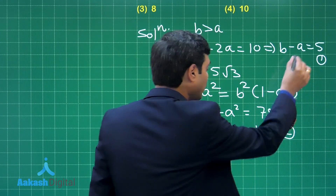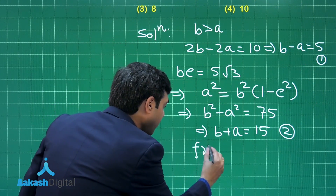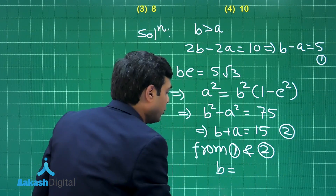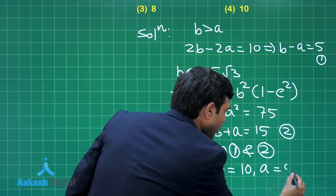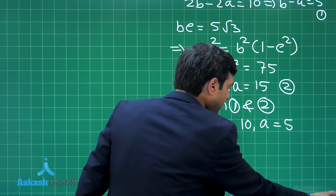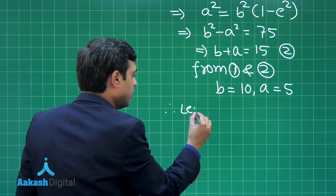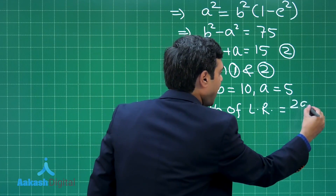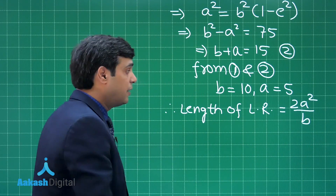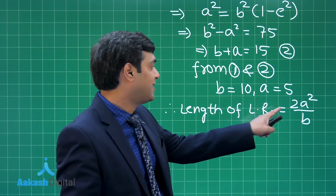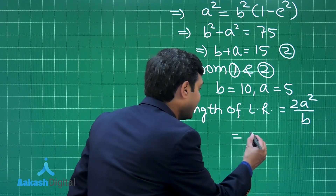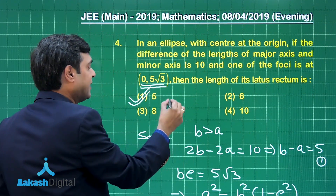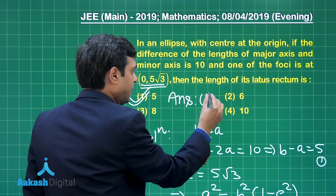Adding equations 1 and 2, a cancels and we obtain b = 10 and a = 5. The length of the latus rectum is given by 2a²/b. Substituting a = 5 and b = 10 gives 2 × 25 / 10 = 5. From the given options, 5, that is option number 1, is the correct answer.